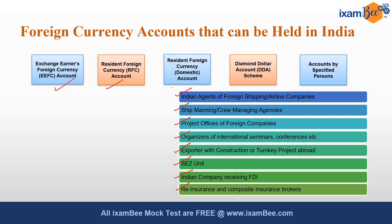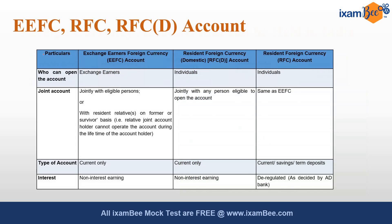We'll differentiate between three accounts: Exchange Earners' Foreign Currency (EEFC) account, Resident Foreign Currency (RFC) account, and Resident Foreign Currency Domestic (RFC(D)) account. The EEFC account can be opened by exchange earners, both individuals or companies. RFC(D) can only be opened by individuals, and similarly the RFC account can also be opened by individuals only. These accounts can be held jointly with eligible persons or with a resident relative on a former or survivor basis.